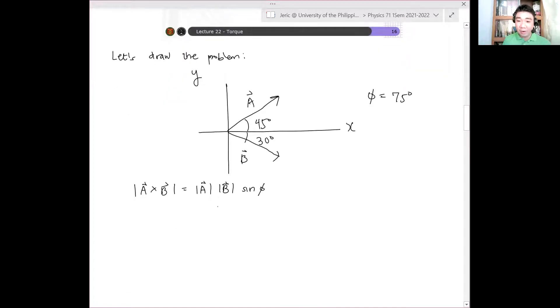And hence, substituting our numbers here, we have 2 cm, the magnitude of vector A is 2 cm, the magnitude of vector B is another 2 cm, sine of 75 degrees. And hence, from there, you can calculate that the magnitude of A cross B is equal to simply 3.86 square centimeters. That's the magnitude.